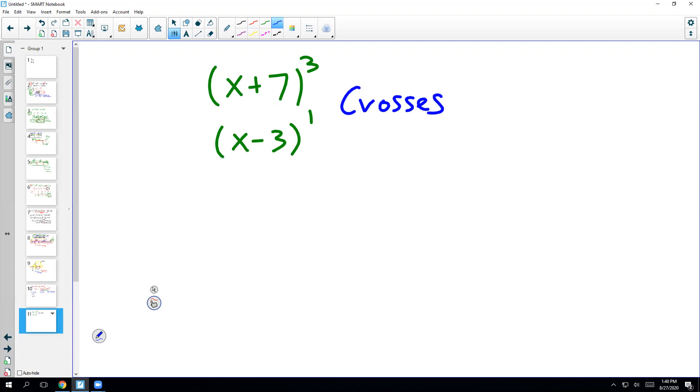And the reason, the only number you're really looking at is the exponent. This is called the multiplicity. Okay, so whenever it's odd, any odd number is going to be a cross. So these are crosses.